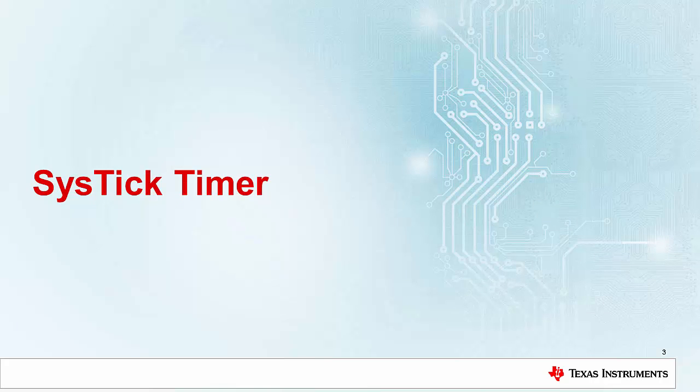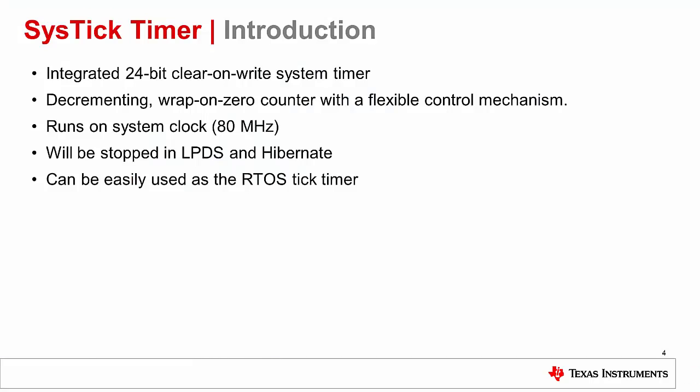First, we'll discuss the SysTick Timer. The SysTick Timer is an integrated 24-bit clear-on-write system timer. It features a flexible control mechanism and functions as a decrementing wrap-on-zero counter. It runs off the 80 MHz system clock. An important note is that this timer will stop in low-powered deep sleep and hibernate modes. This timer is often utilized as the RTOS Tick Timer.